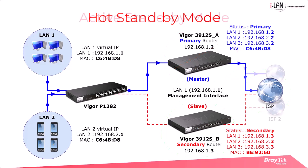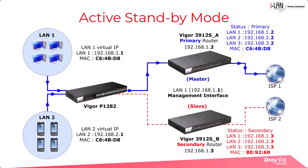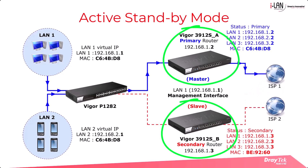The second is active standby mode, where the primary and secondary routers use different WAN sources. Both routers are online simultaneously, each with its own WAN connection. One WAN connection acts as the standby in this mode.